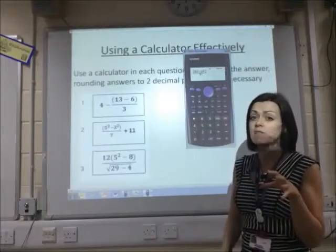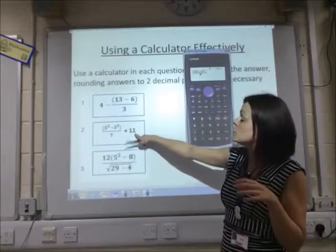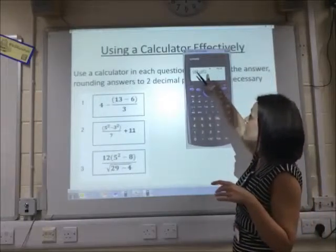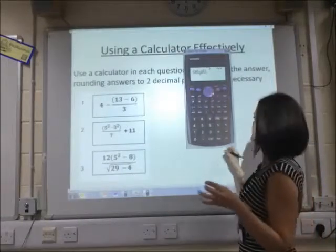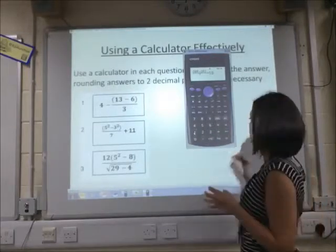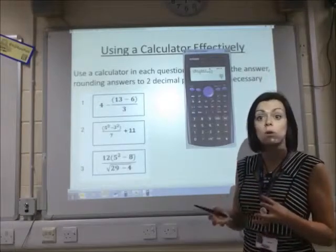Now, the tricky bit to remember here is that this plus 11 is not part of my fraction, so I've got to use the arrow keys here to get out of the fraction before I type the plus 11 on the outside. And as long as I remember to do that, it'll give me exactly the answer that I need, all in one step.